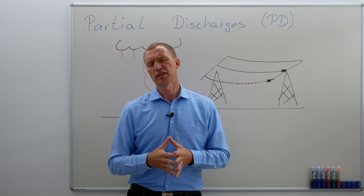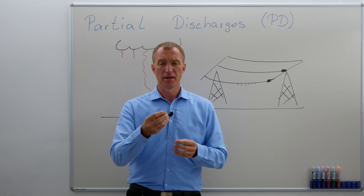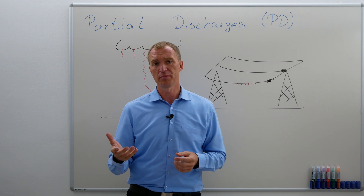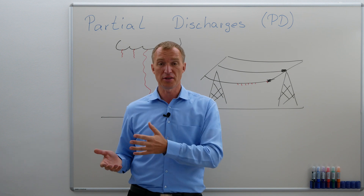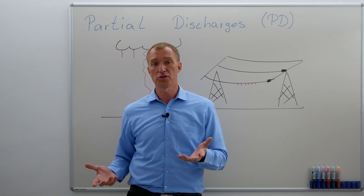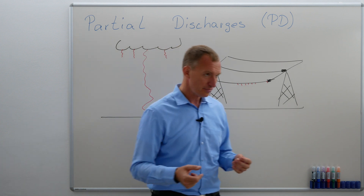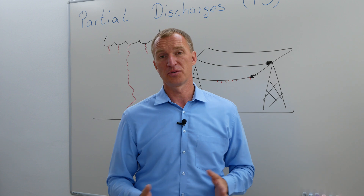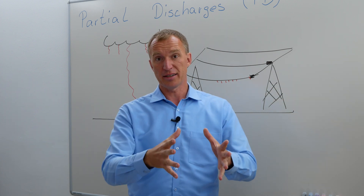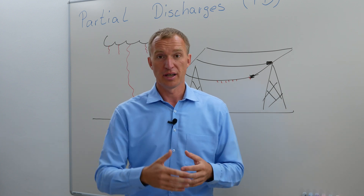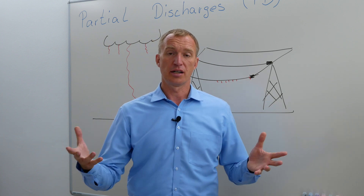Partial discharges are sometimes considered a little bit like cancer on a high-voltage insulation. It starts very subtle, but then it grows over time, destroying the insulation system, and very often it tries to reach the other electrode. Once it has reached the other electrode, we're going to have a full discharge. A full discharge on a high-voltage device is not very funny — it very often results in the destruction of the device, and if connected to the power grid transporting current, it usually results in an explosion.